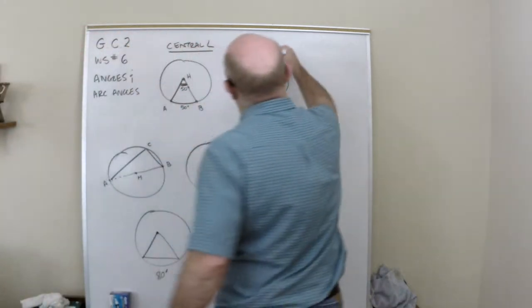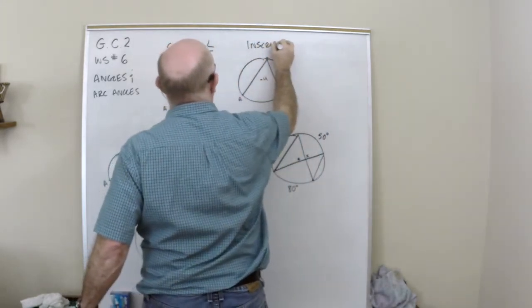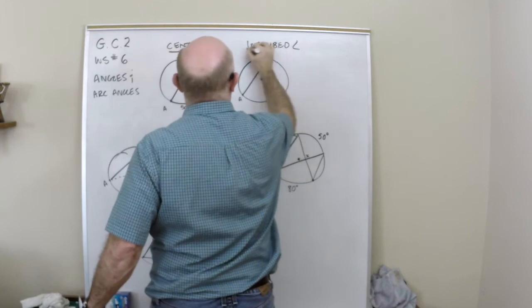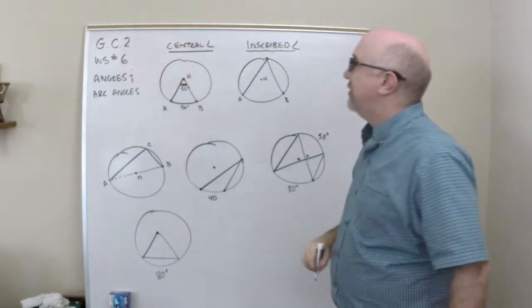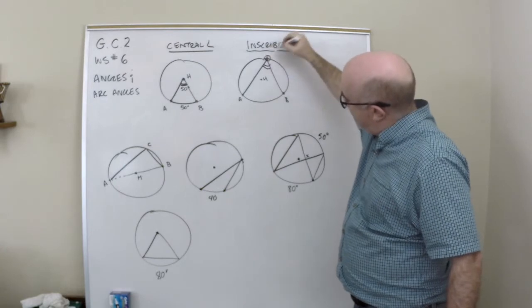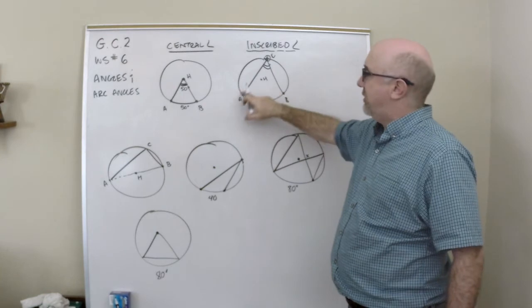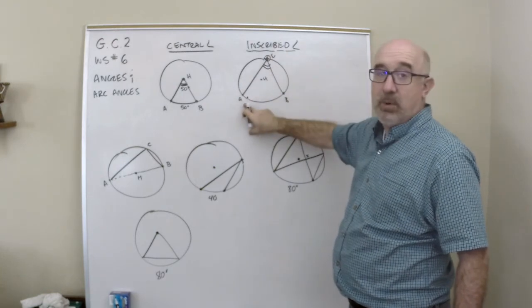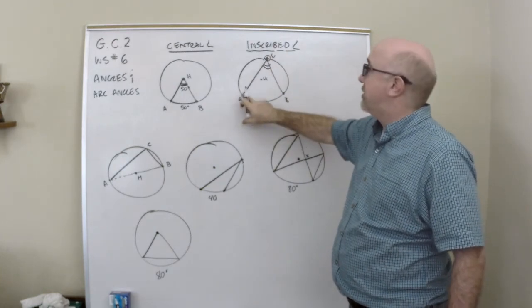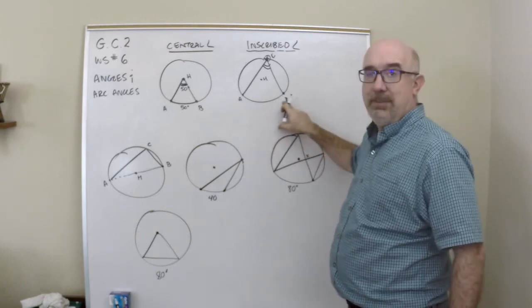Another type of angle is called an inscribed angle. An inscribed angle, you'll notice, has its vertex out on the circle. So it is not at the center, but it's got all three of its points on the circle. So it subtends or sits on arc AB here.